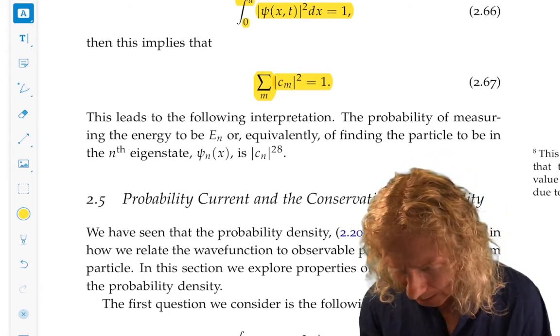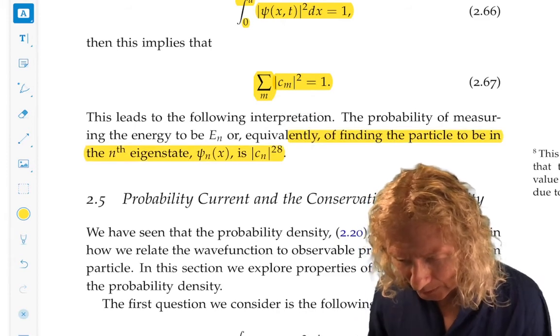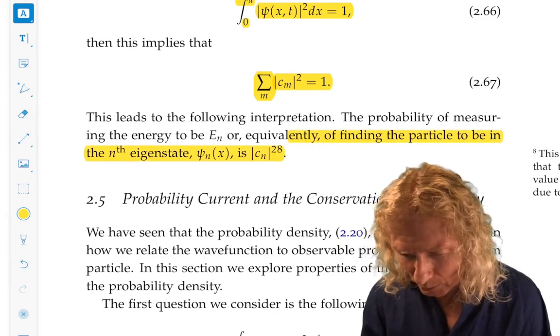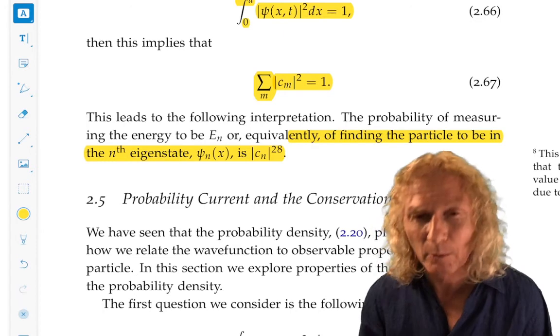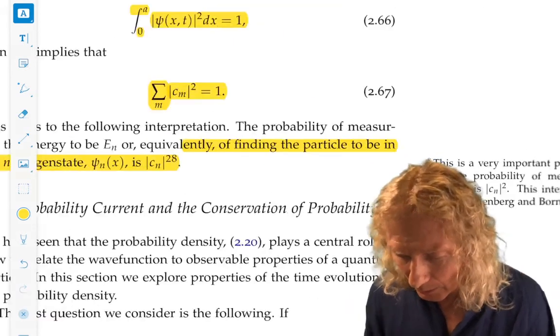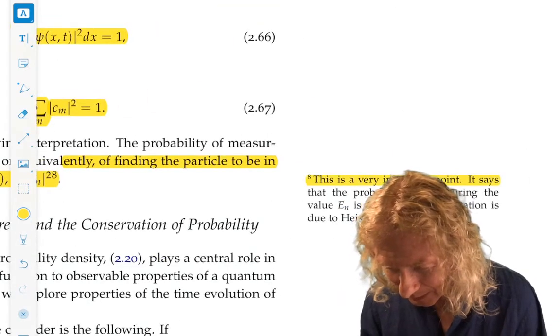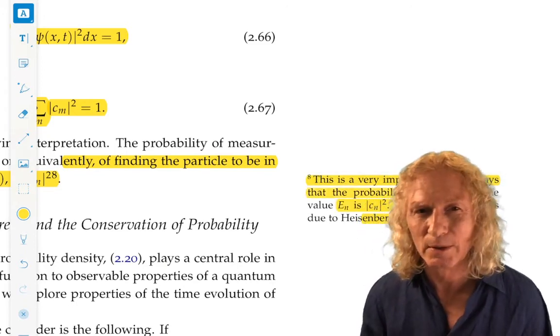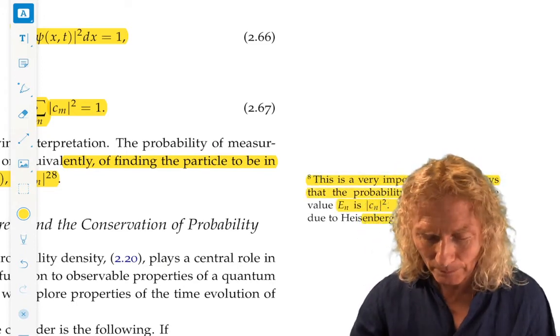This 28 is annoying, because it doesn't mean cn to the 28th, mod cn to the 20th, it means mod cn squared, but there is a margin note that's number 8. And I give you a little extra information. So, careful there.